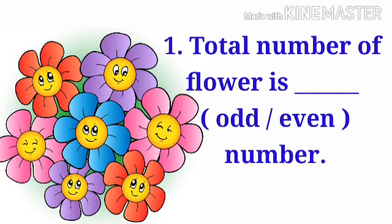Yes, number 1. Total number of flowers is odd or even. Count the numbers. Yes, there are 7 flowers. So, the answer will be odd number.